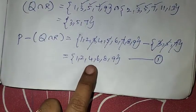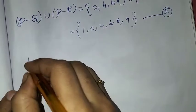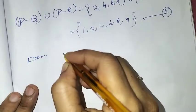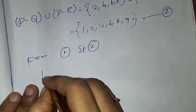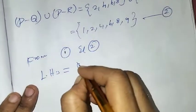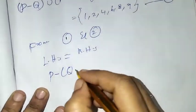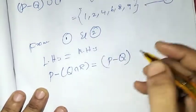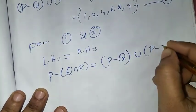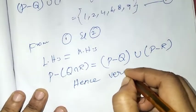The result is {1, 2, 4, 6, 8, 9}. LHS is equal to RHS. That is, P minus Q intersection R is equal to P minus Q union P minus R. Hence, verified.